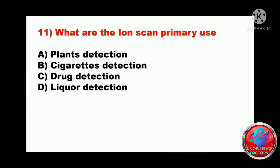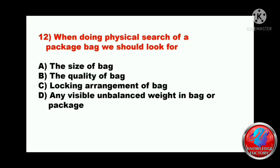Question eleven: what is the ion scan's primary use? A) plants detection, B) cigarettes detection, C) drug detection, or D) liquor detection. The answer will be C - drug detection. Question twelve: when doing a physical search of a package or bag, we should look for A) the size of the bag, B) the quality of the bag, C) locking arrangement of the bag, or D) any visible unbalanced weight in the bag or package. The answer will be D - any visible unbalanced weight in the bag or package.